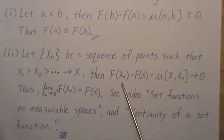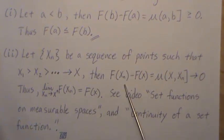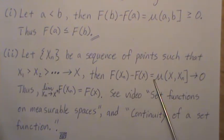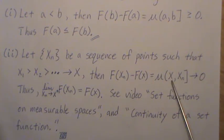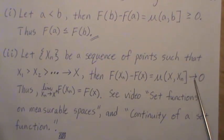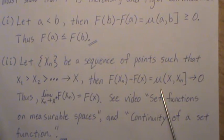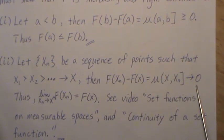If we look at this Lebesgue-Stieltjes measure, F(x_n) - F(x) is equal to μ of this right semi-closed interval (x, x_n]. But as n goes to infinity, this goes to the empty set, and this measure of the empty set goes to zero.